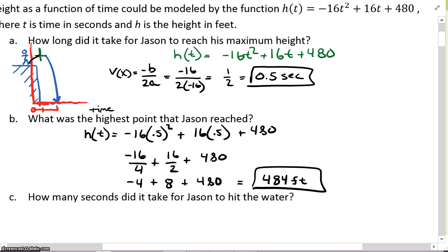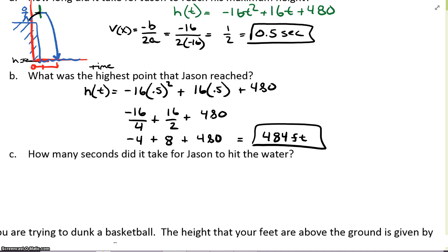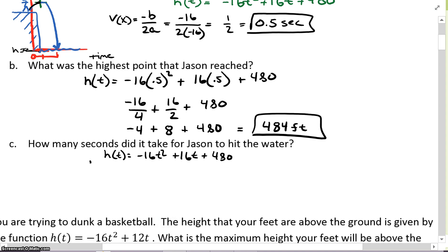How many seconds did it take for Jason to hit the water? When does he hit the water? When the height is equal to 0. So we just got to make our height equal to 0. So we're just going to set this quadratic, h(t) equals -16t² + 16t + 480, and set that equal to 0. I'm going to scratch out the h(t). All we got to do is solve for the quadratic, solve for the roots.